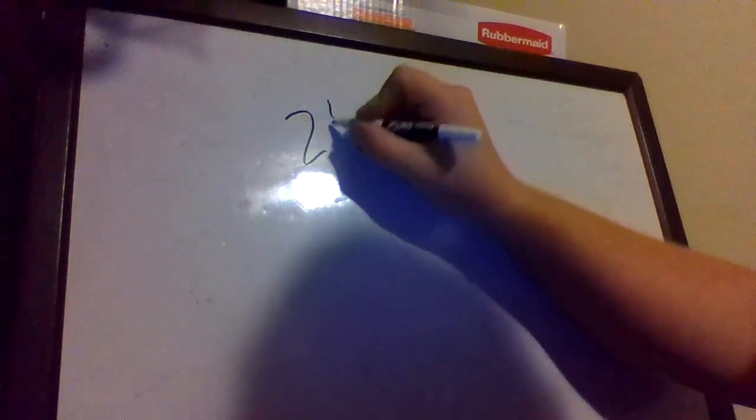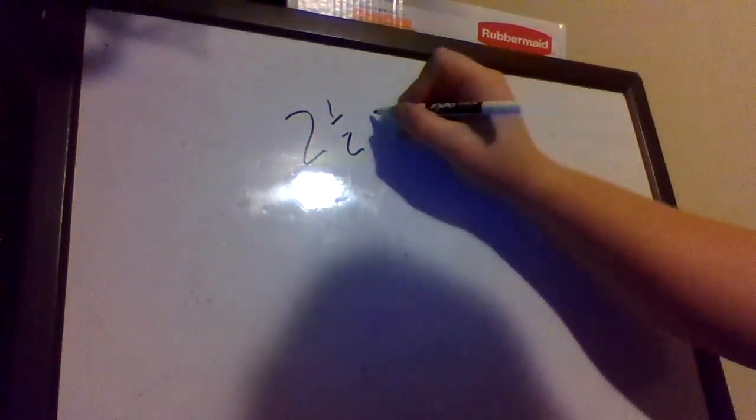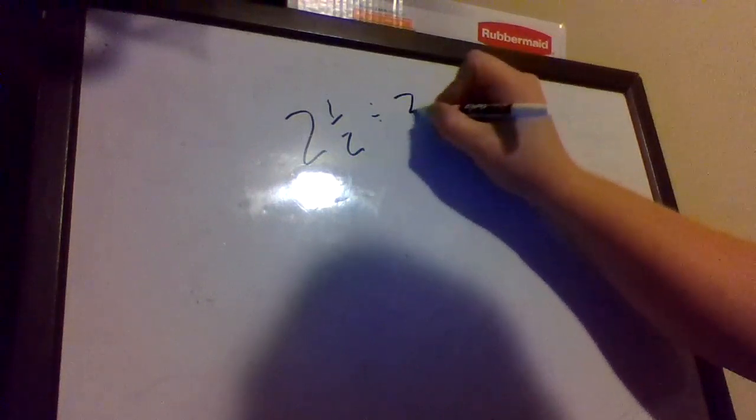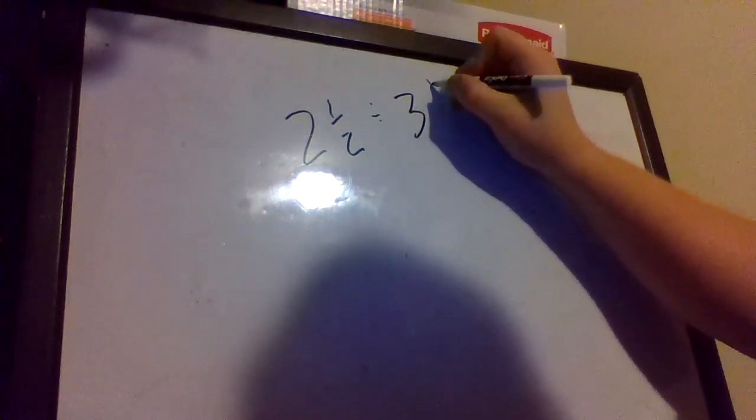Okay, now today we're going to divide mixed numbers. Dividing mixed numbers is almost exactly like multiplying mixed numbers. There's just one difference, and you'll see what I'm talking about in a minute. So let's make up two sets of mixed numbers. We've got 2 and 1 half divided by 3 and 1 third.